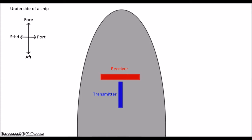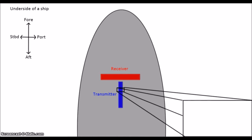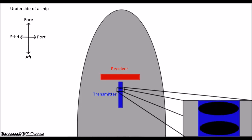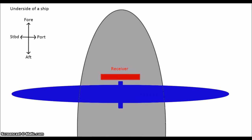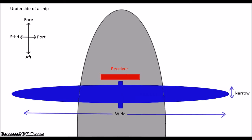The transmitter is composed of multiple piezoelectric elements all in a row, called an array. It is going to emit a pulse of energy that is narrow in the fore-aft direction but wide along track. This is possible due to the same principles we talked about earlier, where the frequency of the pulse and the size of the transmitter control the shape of the generated wave.